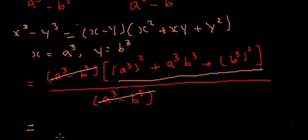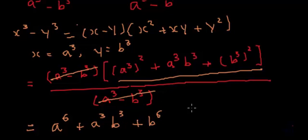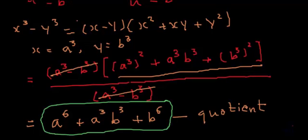The divisor a cube minus b cube cancels with that factor, and we are left with the quotient. The quotient will be a cube squared, that is a to the power 6 — since a to the power 3 multiplied by 2 equals 6 — plus a cube b cube plus b to the power 6. So this is our quotient, obtained using the factorization method with a few identities.